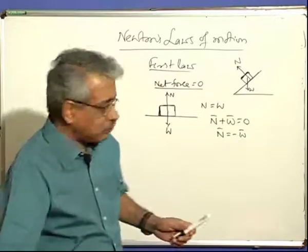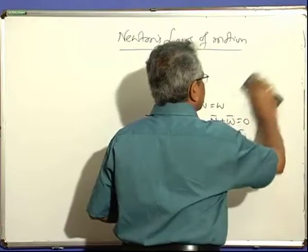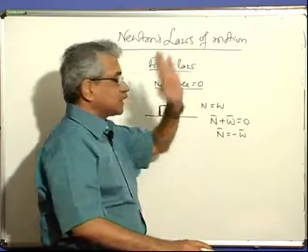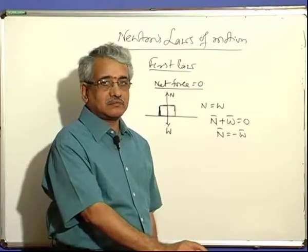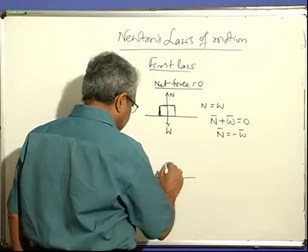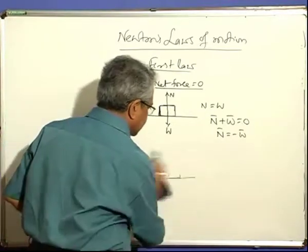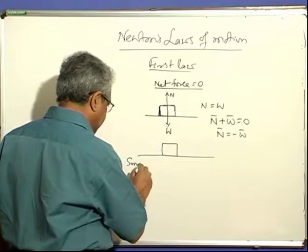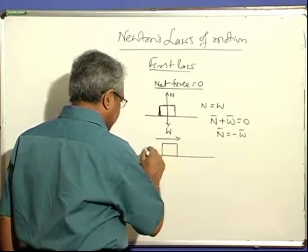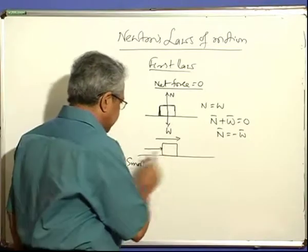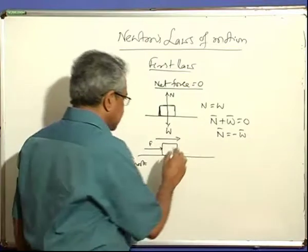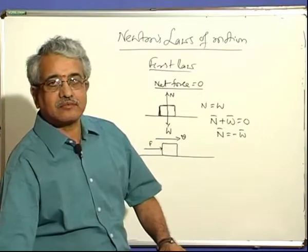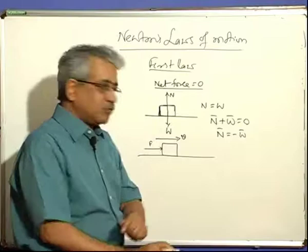Take another example: there is a body on a smooth surface. You apply a force on this body — because we said, unless a force acts, the body will not move. Just apply a force and keep pushing the body. Suppose it is moving with constant velocity V. Even if the surface is smooth, you can push the body on that. You will see the body is moving with velocity in the direction of the applied force.